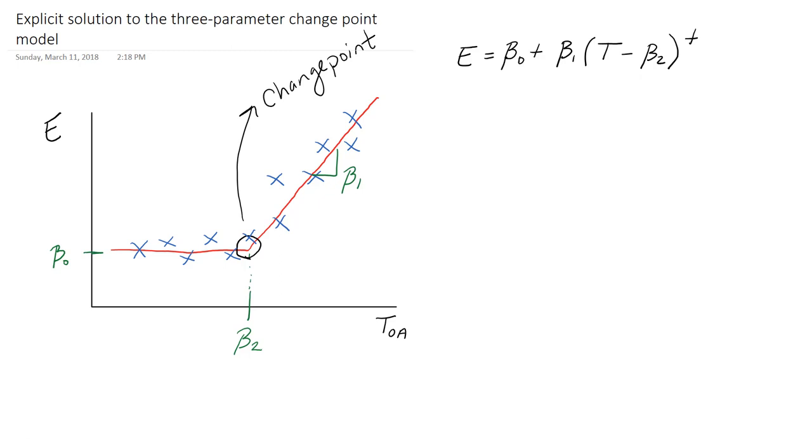To give you a more concrete sense of what these things are I'll give you some units that you would actually see if you use this model in industry. Our energy use will be in kilowatt hours, temperature in degrees Fahrenheit. Beta_0, our constant term, will be in the same units as our energy. Beta_1 will be a slope term so this is kilowatt hour per degree F, and beta_2 is our change point so that's in units of temperature. Anytime you see additions or subtractions you need to have the same units.